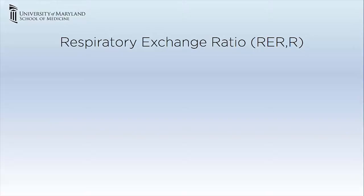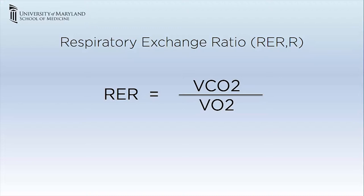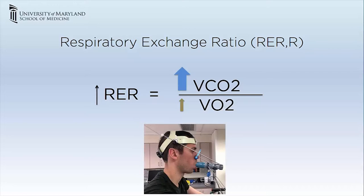Respiratory exchange ratio, or RER, or R, is the ratio between carbon dioxide production and oxygen consumption. When exercise continues beyond the anaerobic threshold, carbon dioxide production increases out of proportion to oxygen consumption due to buffering of lactate, and hence RER increases. During CPET, these parameters are measured at the level of the mouth. If they are measured at the level of the tissue, this ratio is called respiratory quotient, or RQ.